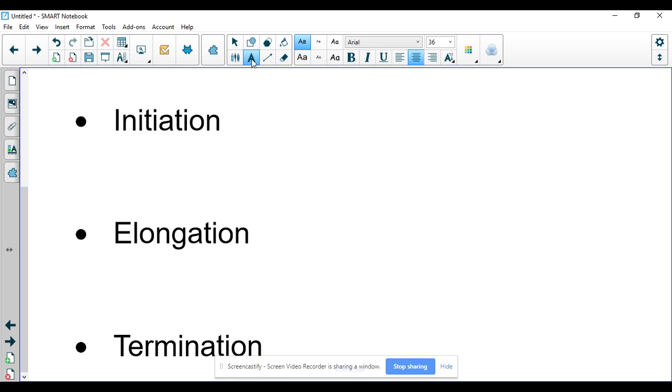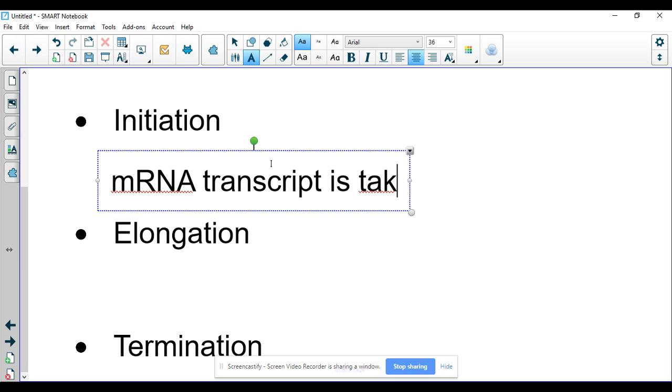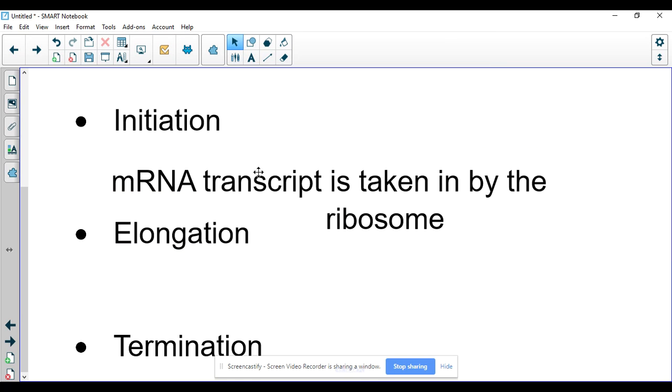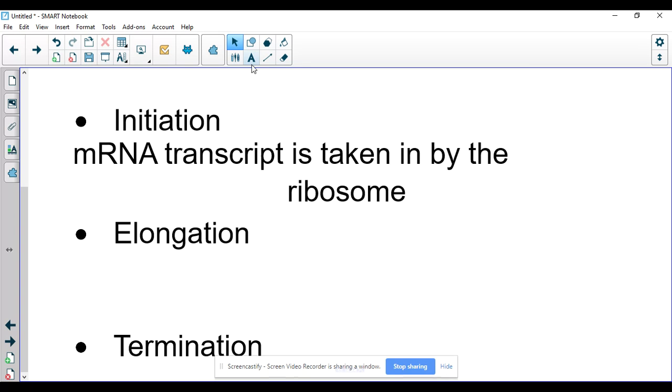What you need to look for when we start initiation, this is when the mRNA transcript is taken in by the ribosome. So this is when we take that mRNA transcript into the ribosome. That is initiation. All mRNAs are going to start with the same starting codon. That is going to be AUG. That ribosome will recognize this start codon and it will take it in. That's initiation.